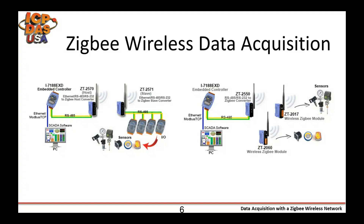We're seeing two different ways to build a data acquisition system using a ZigBee network. On the left-hand side, you can see what is essentially an RS-485 network using ZigBee as the bridge, which would be useful in situations where the extension of a wired network would be inconvenient or even dangerous. The I-7188 automation controller sends instructions to the ZT2570 ZigBee host, and the ZT2571 slave module converts the signal back to RS-485, passing instructions to a network of Modbus Remote I/O modules. On the right-hand side, we see the same process handled by ZigBee end devices — the ZT2017 and the ZT2060 — forming its own wireless network with decreased wiring and more flexibility in placement.